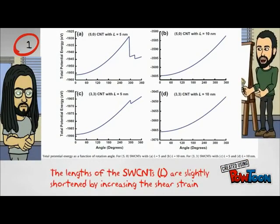Taking into consideration the total potential energy as a function of the rotation angle, it was seen that the length of the single-wall carbon nanotubes were slightly shortened by increasing the shear strain until it reaches a critical point. Whereas for tension as a function of rotation angle, it was seen that as the rotation angle increases, the tension decreases, and this was due to compression increasing. This was a good result as compared to previously conducted experiments.